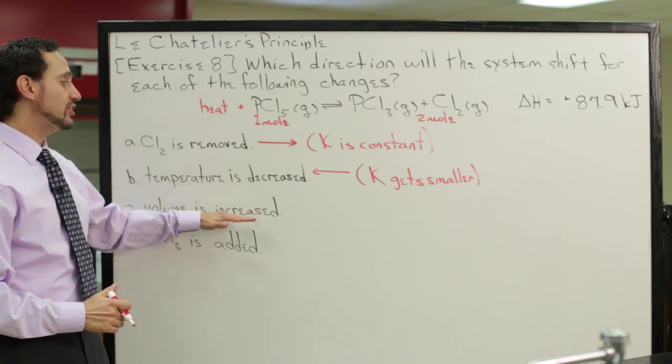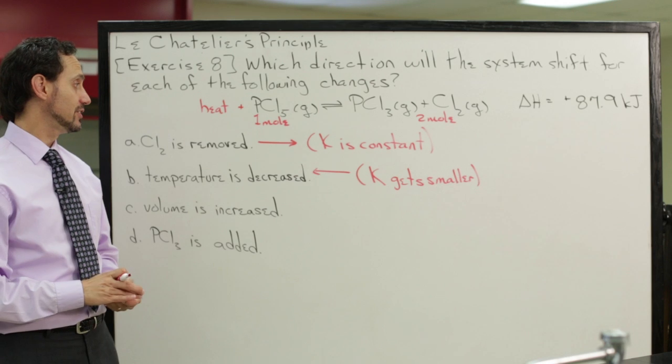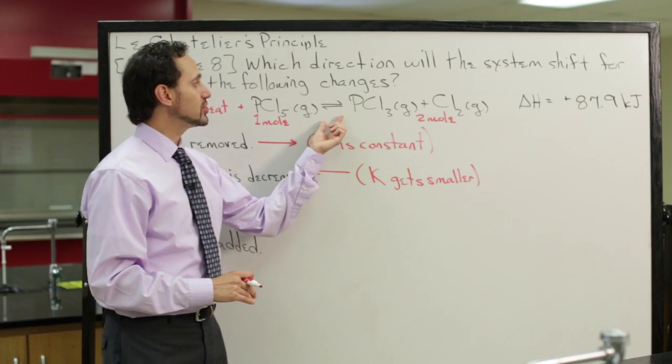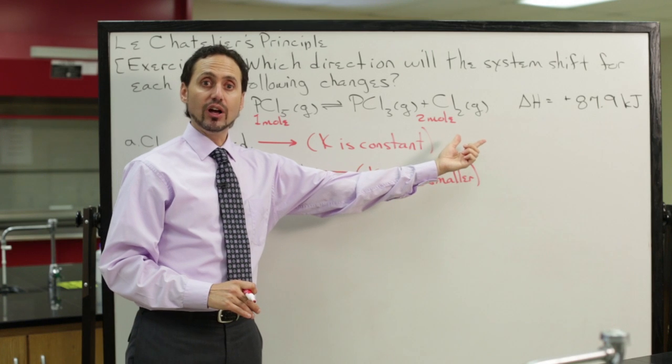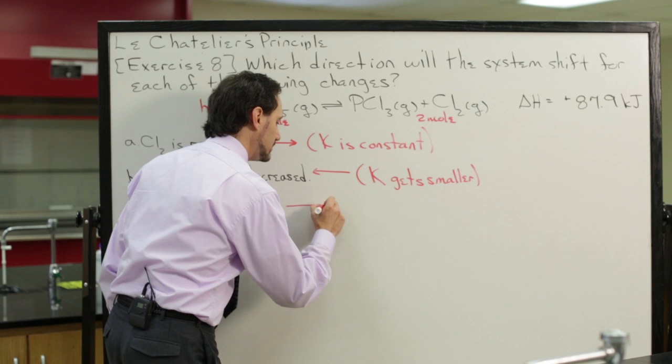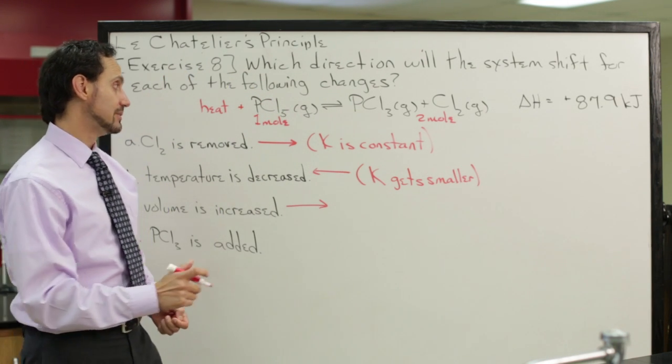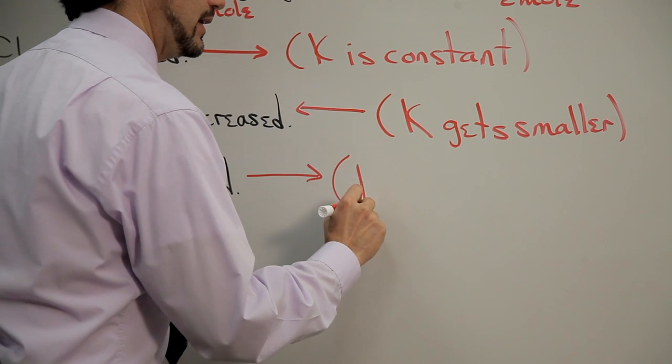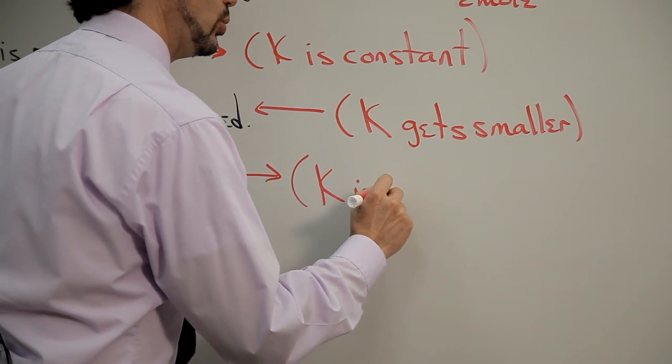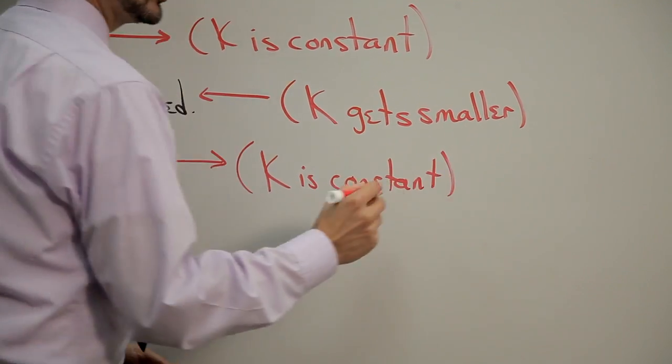So if we're increasing the volume, that means we have room for more moles of gas. In this situation, we have more moles of gas on the product side, so the system will shift to the right to produce more moles of gas. And again, the equilibrium constant would remain the same value because the temperature is not changing.